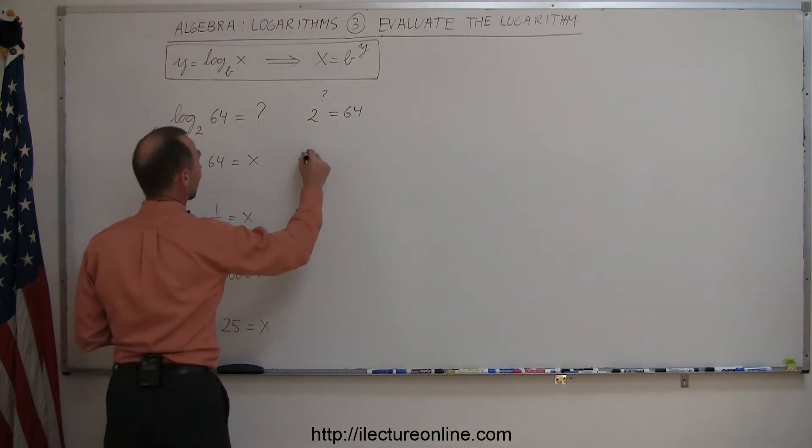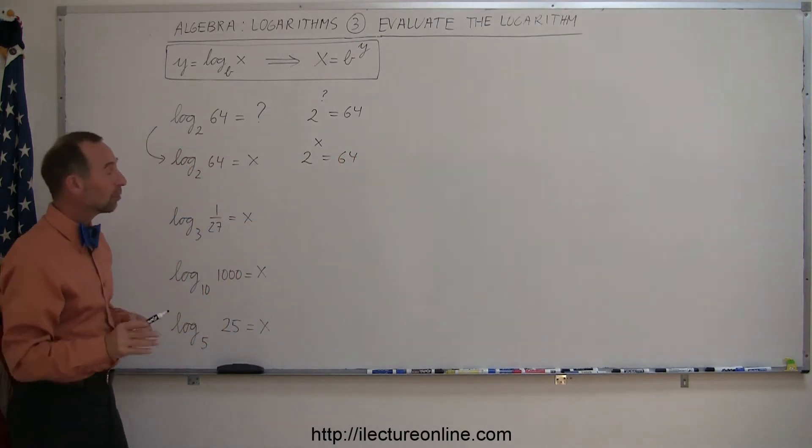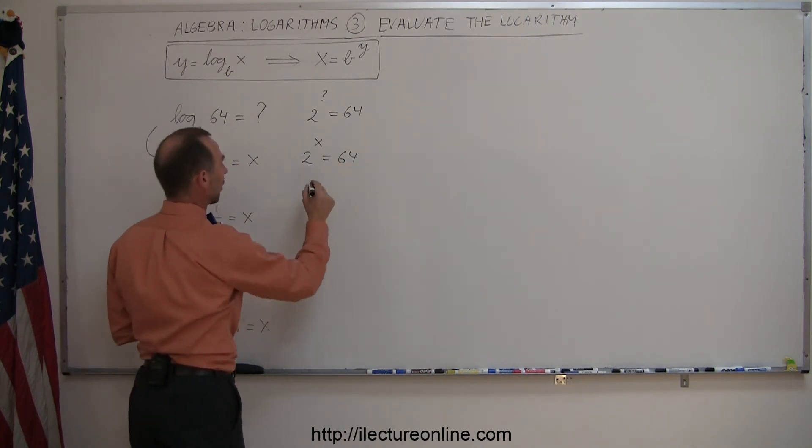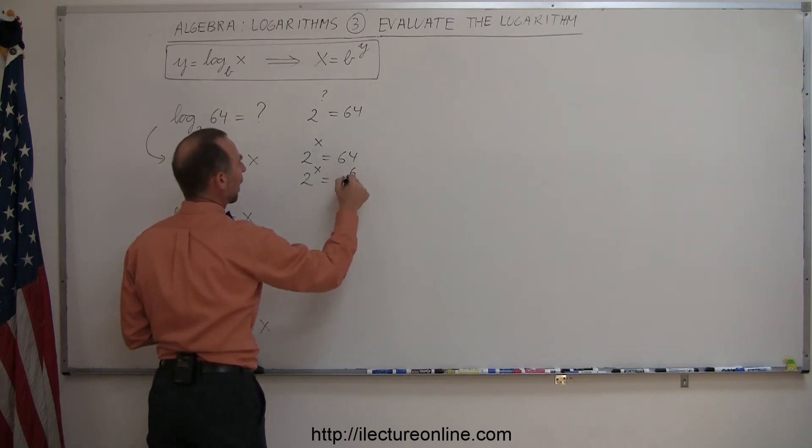And that means that we're taking the base 2, raising it to the x and getting 64. Then how do you solve for x? And the best way to do that is to take the 64 and write it as an exponential form. So what we can do here is say 2 to the x is equal to, 64 can be written as 2 to the sixth power and therefore x must equal 6. And that's how you do that.